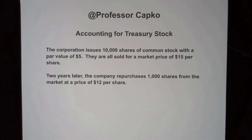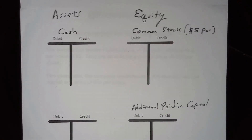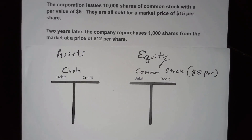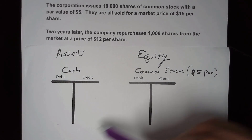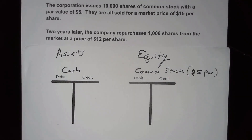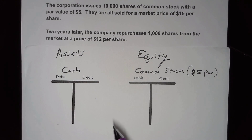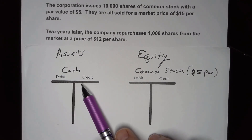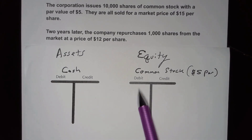Let's pull out our T-accounts so we can do some accounting for this. I've got my assets on the left and my owner's equity on the right. We're not going to really impact liabilities, so we're not going to worry about that today — we're going to deal with the assets and the equity accounts.